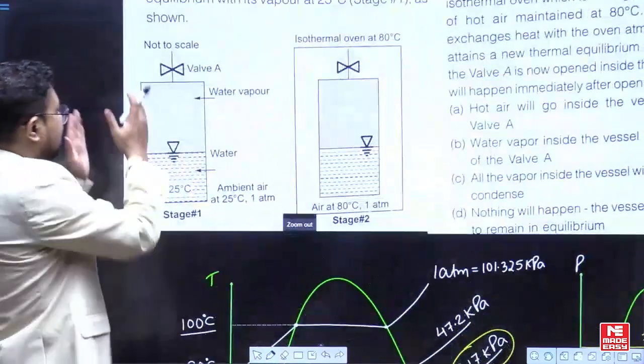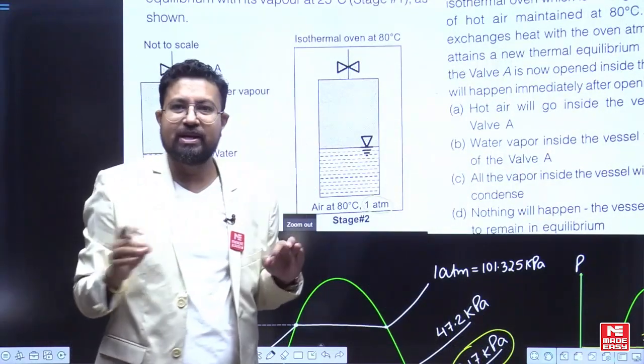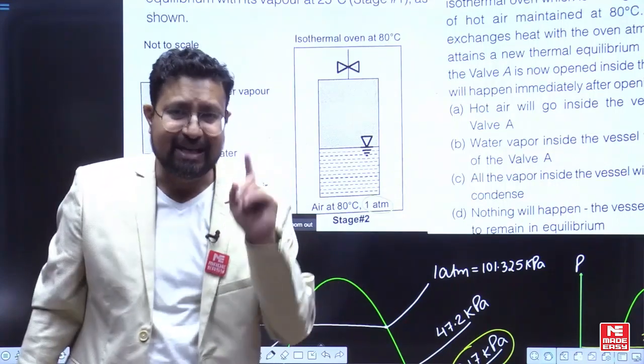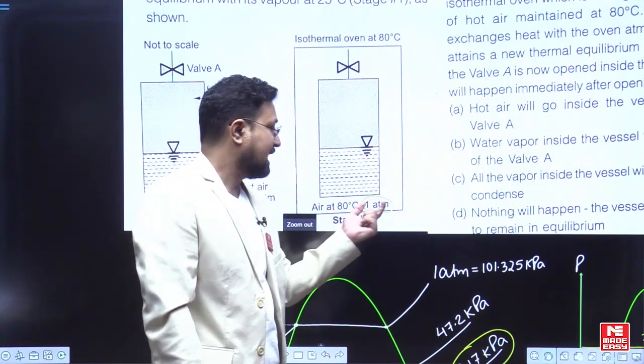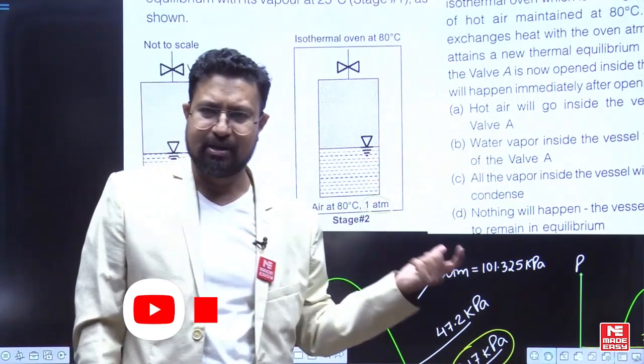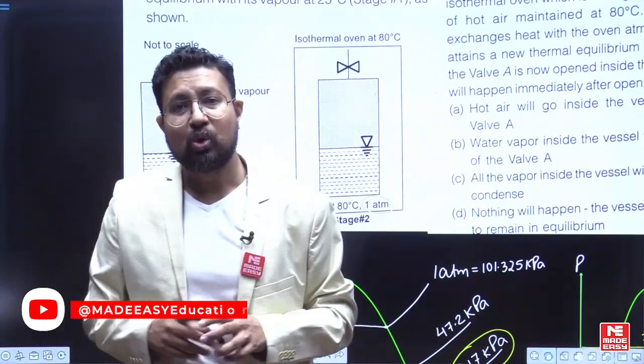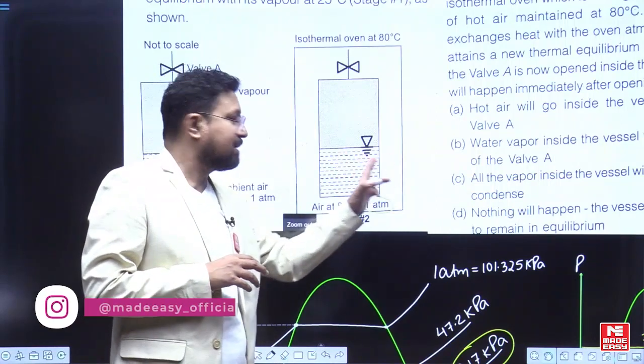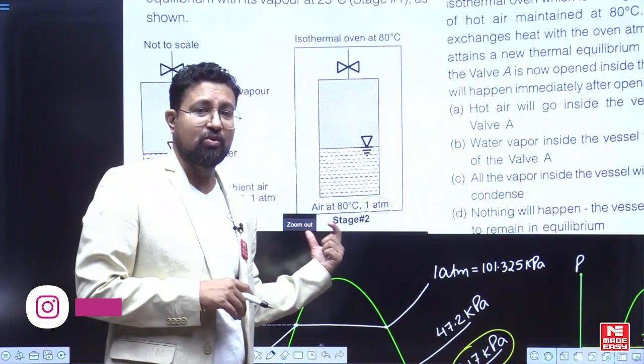Now what we are doing is we have to keep this in an oven. Now the oven is given to be isothermal. That means the temperature of the oven is not changing. Inside the oven temperature is 80 degrees Celsius that is maintained, and the pressure of air in the atmosphere, I mean the atmosphere of the oven, is one atmosphere. So this vessel is closed, so it is not directly impacted by the pressure here.